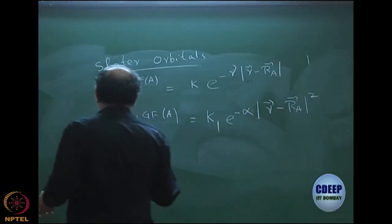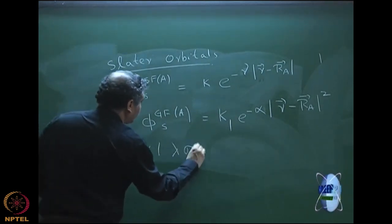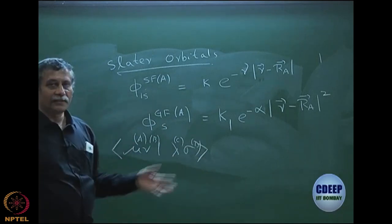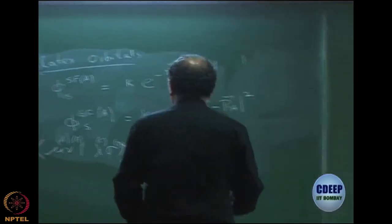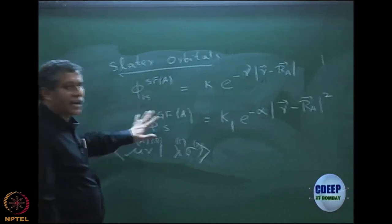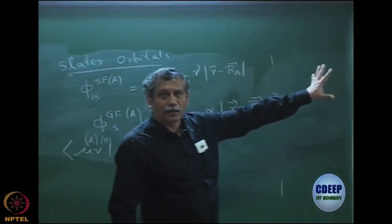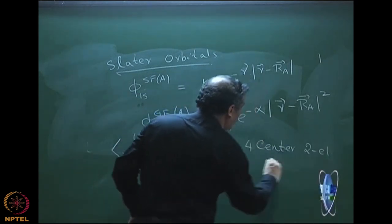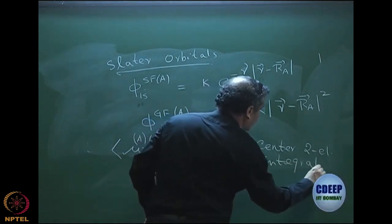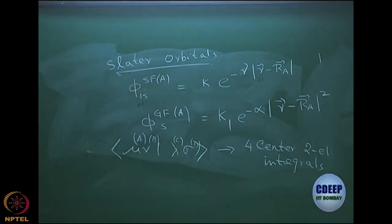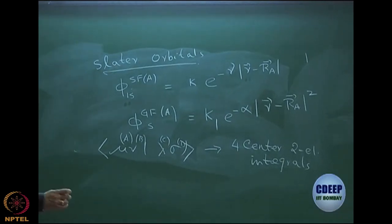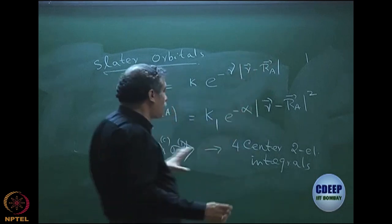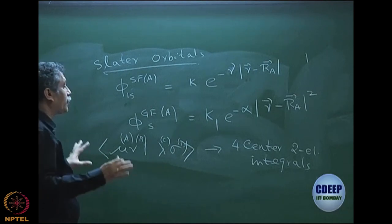The problem with Slater functions is the following: when I calculate the (mu, nu | lambda, sigma) integrals, mu can be centered on A, nu on B, lambda on C, and sigma on D in a polyatomic molecule. These are called four-center two-electron integrals. They are considerably complex to evaluate because each of them has a different R_A, R_B, R_C, R_D, making them computationally extremely expensive. That is the reason people did not want to use Slater functions.